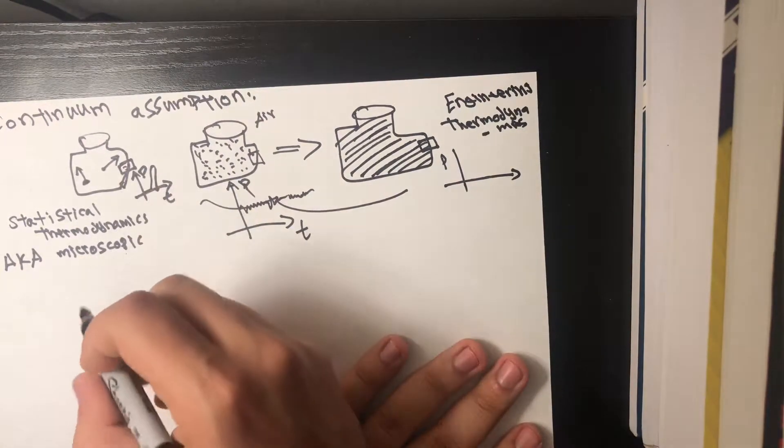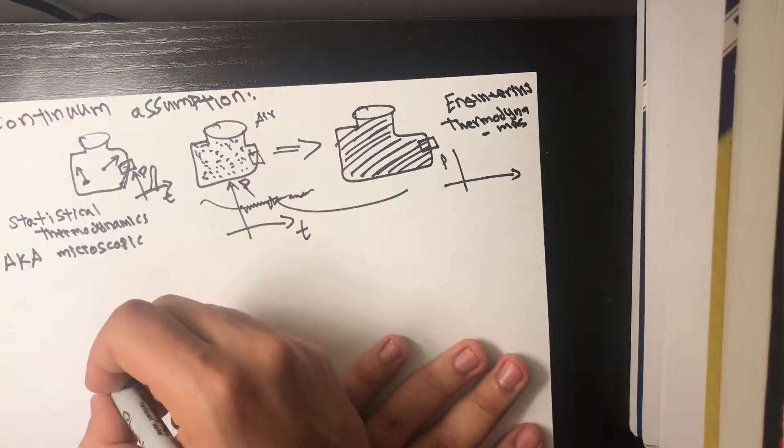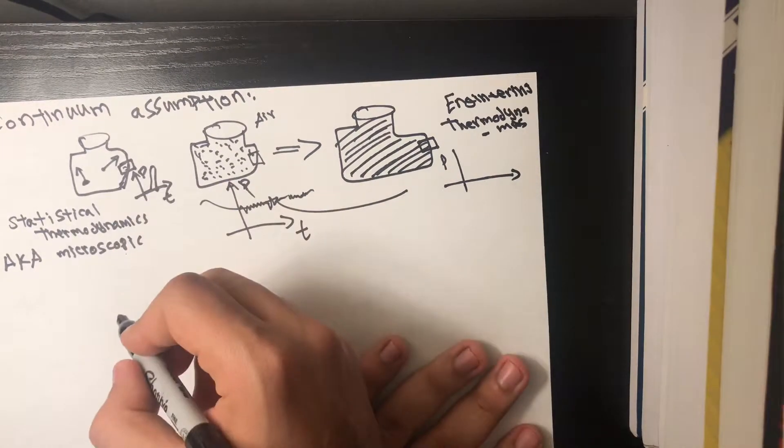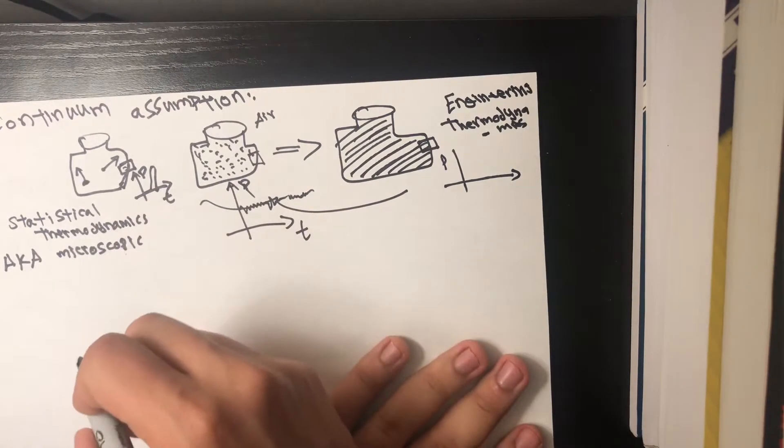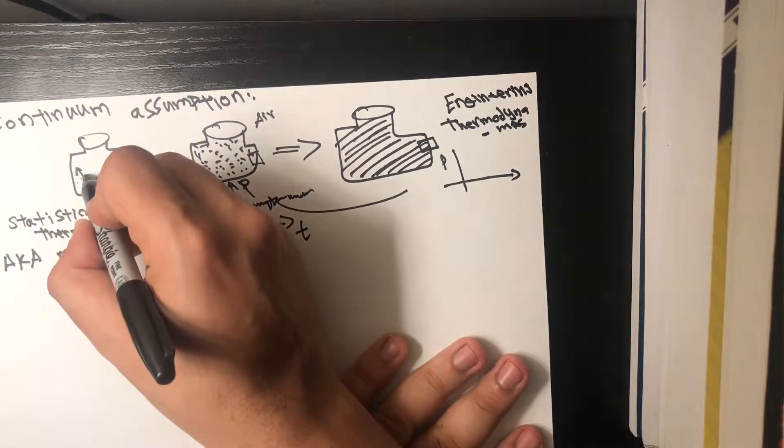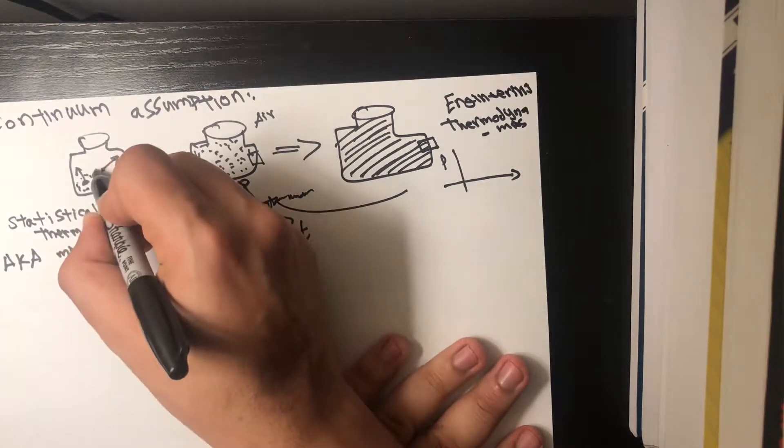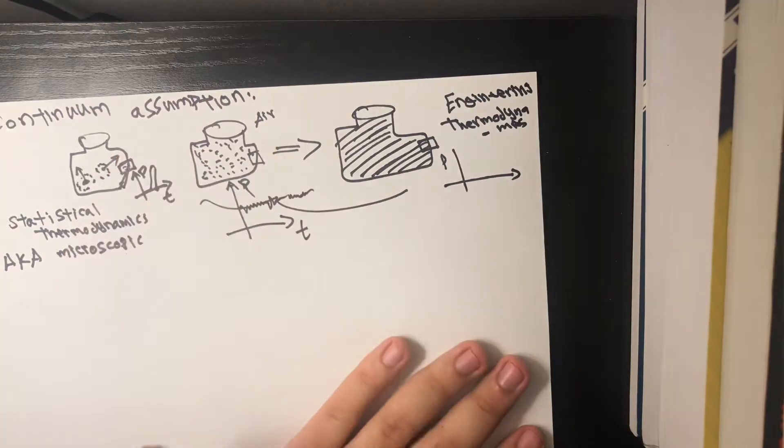We can't really study that system without considering the individual behavior of the molecules, how likely they are to hit that spot, which is why it's called statistical thermodynamics. So you'd study each molecule on its own.